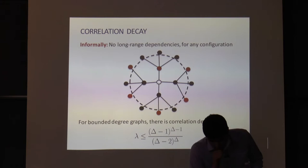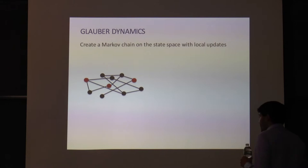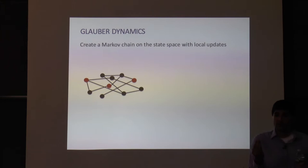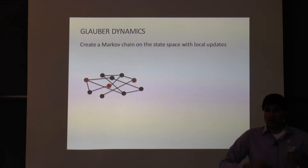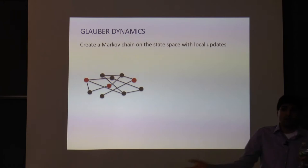The threshold for how lambda relates to delta comes from understanding recurrence properties on trees in terms of correlation decay — for bounded degree trees, you get correlation decay if and only if you have this property. Once you can turn your graph into a tree and do recurrences to compute marginal probabilities, that becomes your algorithmic approach: go out to some distance in the tree, cut off everything beyond that, and compute marginals recursively.